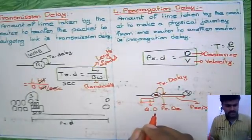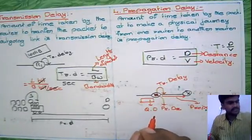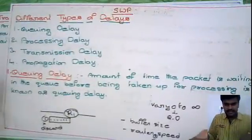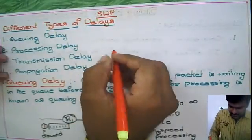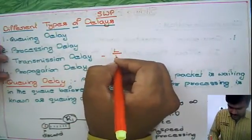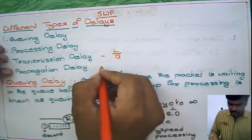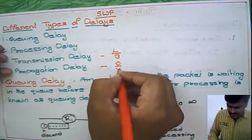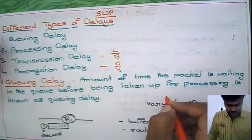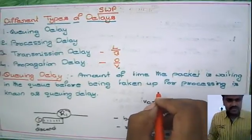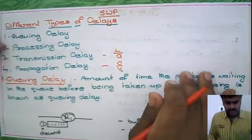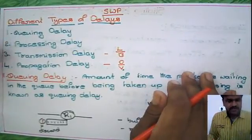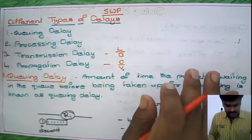These four are the definitions we are using: queuing delay, processing delay, transmission delay - length by bandwidth, and propagation delay - distance by velocity. These are all the four definitions, these delays we are going to use in every concept in this remaining computer networks course.